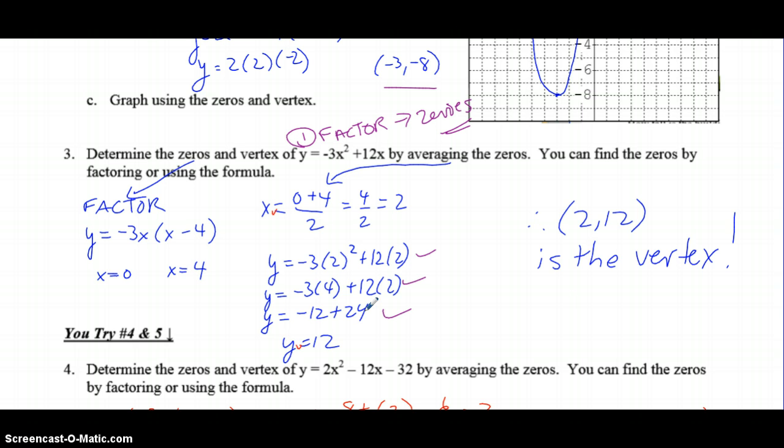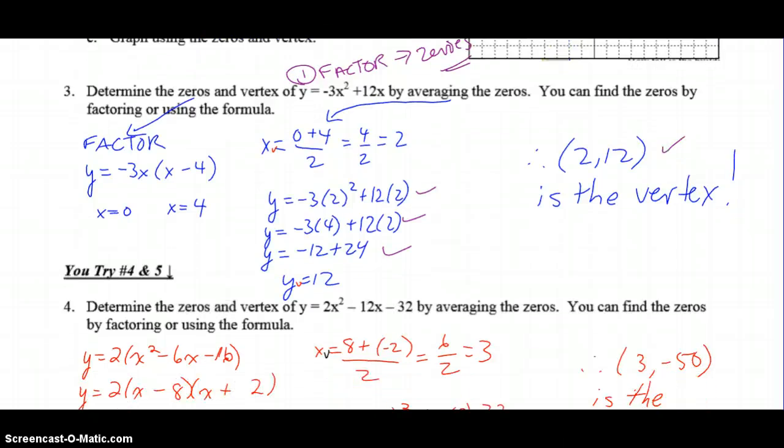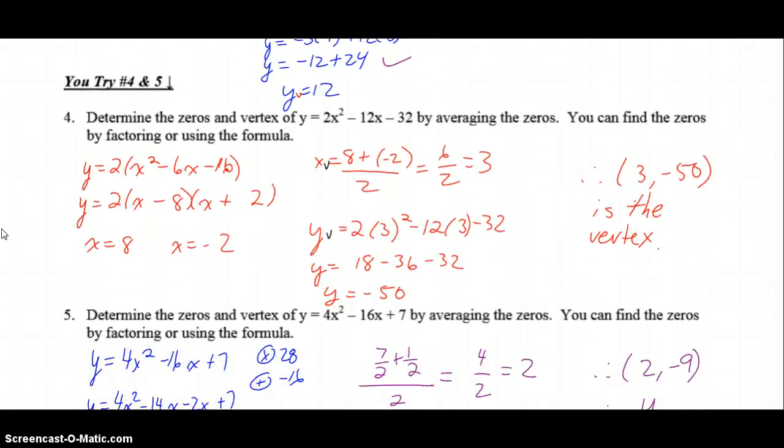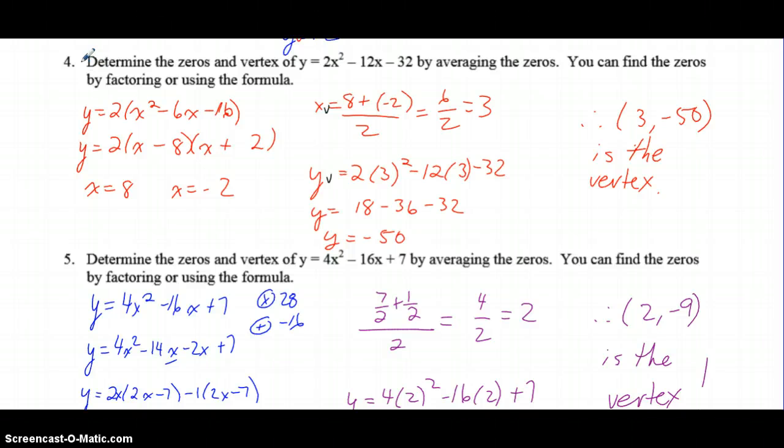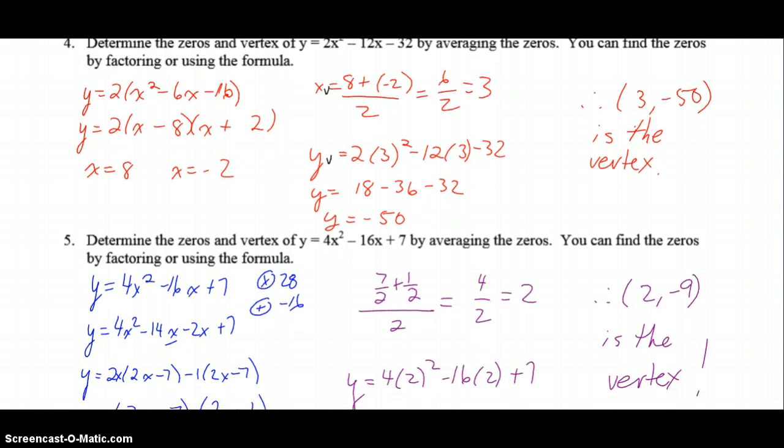Just be aware that if you punch it in and get the wrong number, it makes it more difficult to get part marks. If you are going to be a super-fast calculator user, make sure you double-check your answer more than once to make sure you've got the same number twice. So 2, 12 is our vertex. For numbers 4 and 5, similar questions—find the zeros first, then average the zeros. For question number 4, I've got a vertex of 3, negative 50. If you've got a different answer, pause the video and check it out.